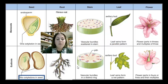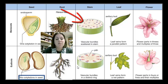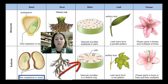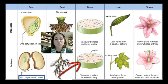In stem structure, monocots have their vascular bundles scattered randomly throughout the stem. However in the eudicot, these are organized into a ring around the edge — so there's real organization in the eudicot.